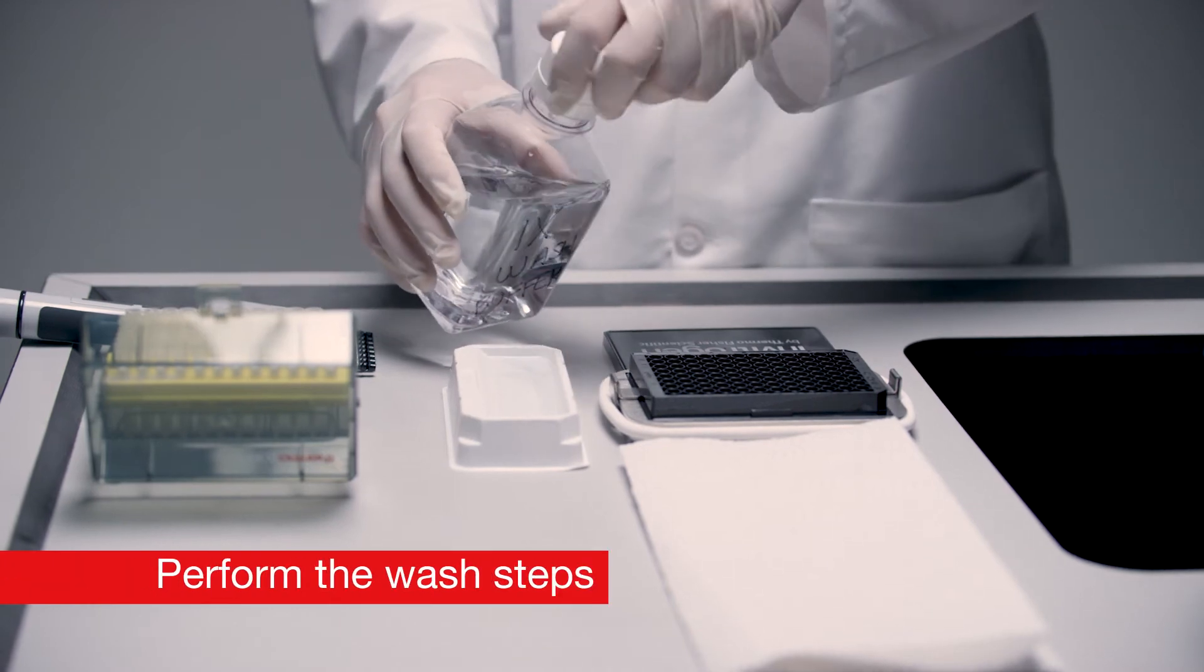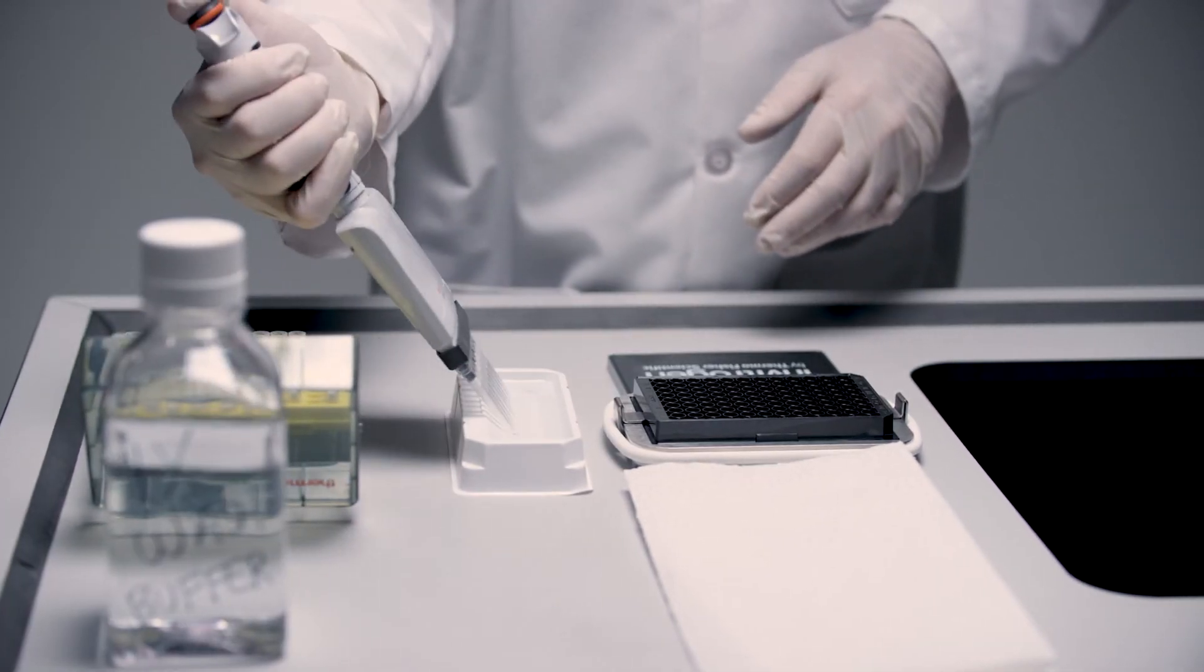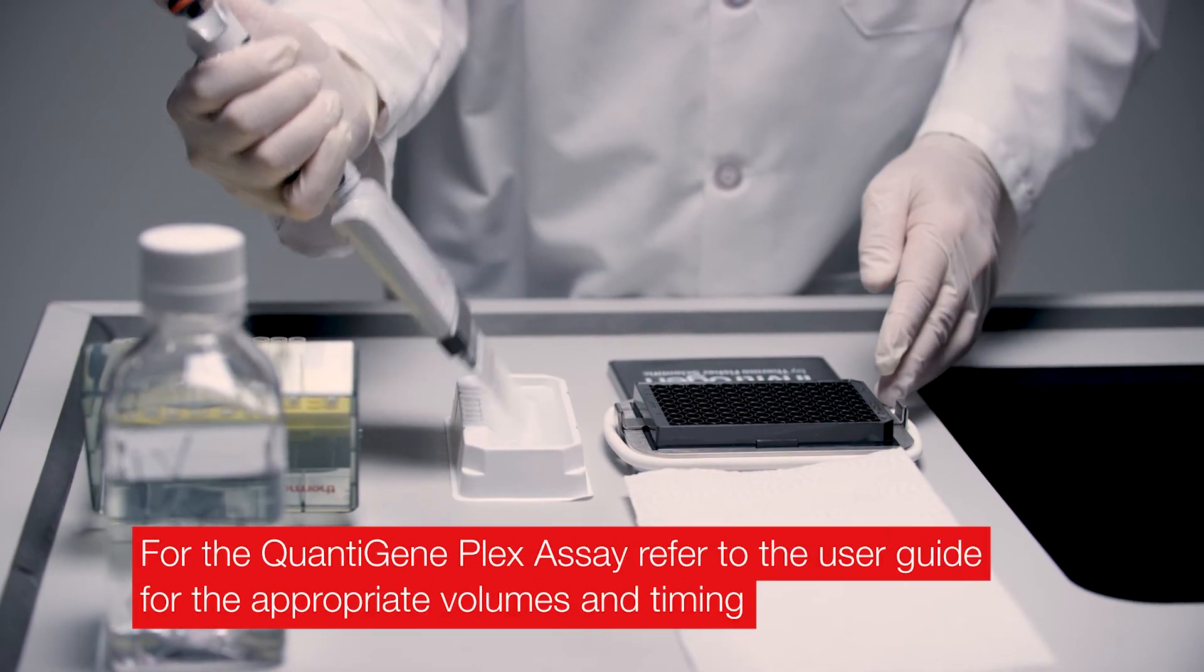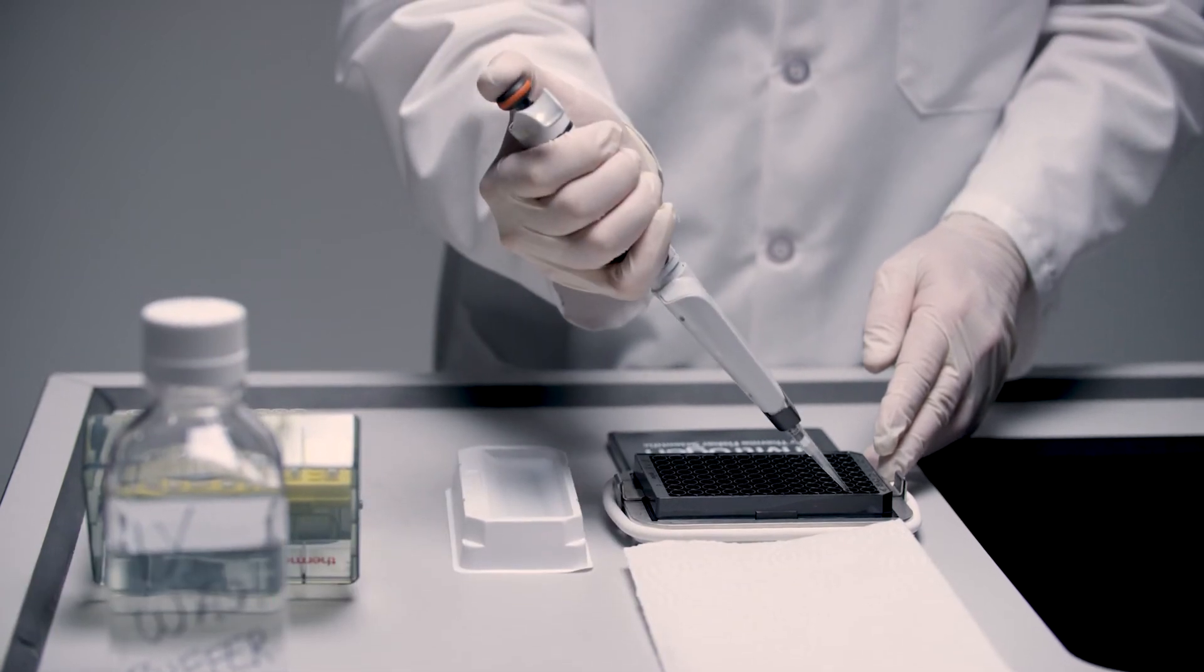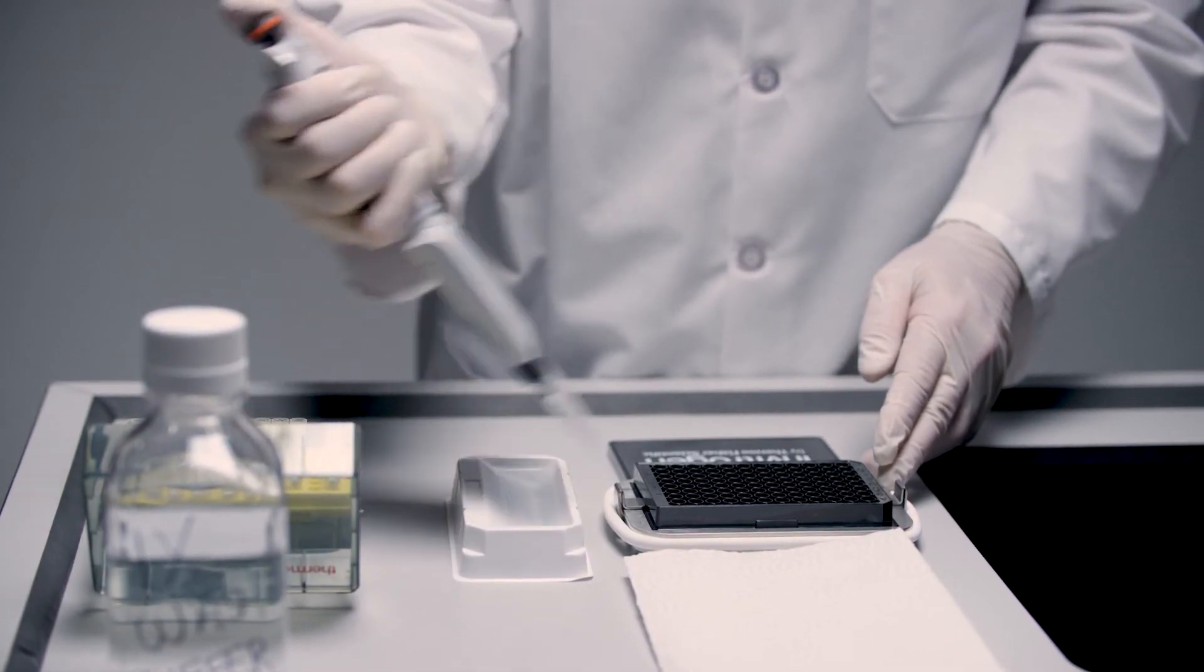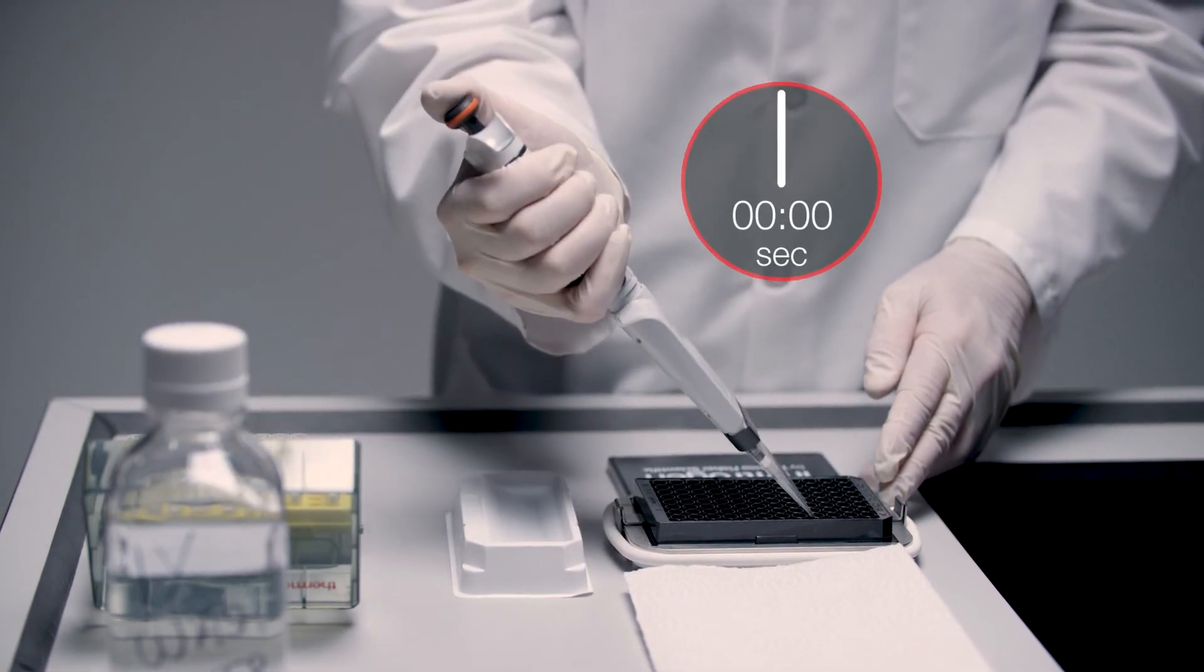To begin the wash step, pipette 150 microliters of 1x wash buffer from a clean reservoir into each well using a multichannel pipette and allow the beads to settle for 30 seconds. Do not remove the plate from the handheld magnetic plate washer during the wash steps.